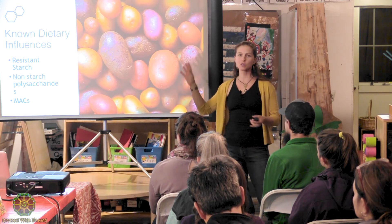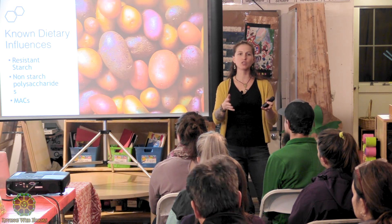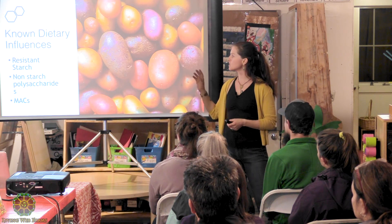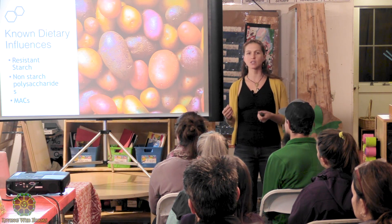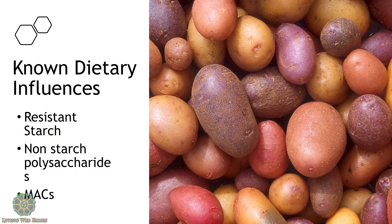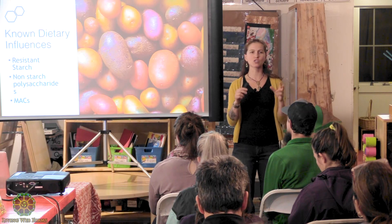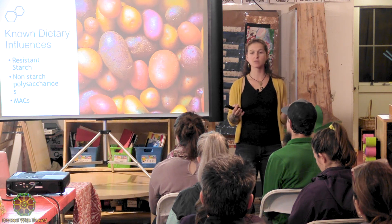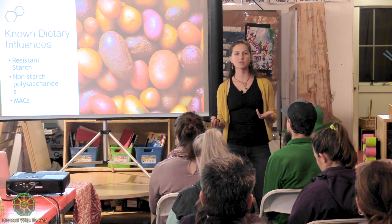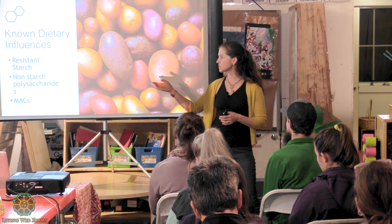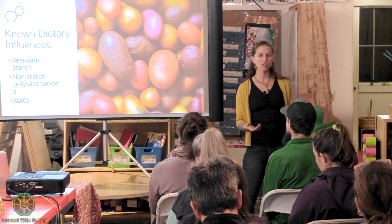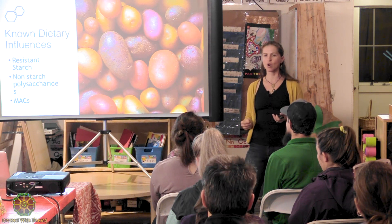Carbohydrates come in all sorts of different forms. Some you can use, some you can't — but it's the ones you can't that bacteria and microbes are most interested in. These are things like resistant starch and non-starch polysaccharides. They're fiber-like substances, and they can be lumped together in something called MACs — microbiota-accessible carbohydrates.